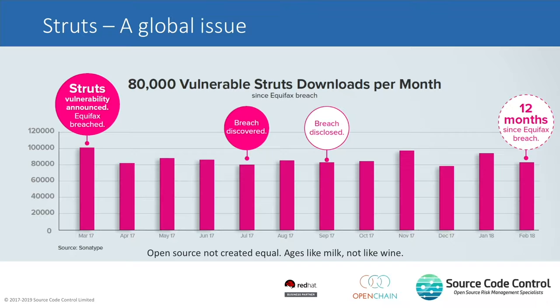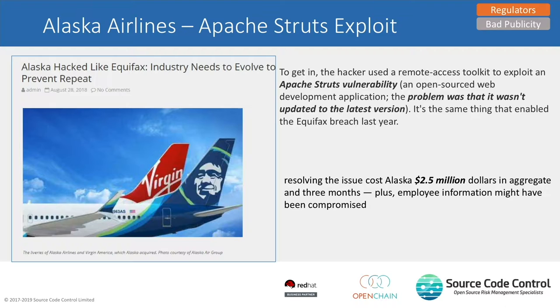This happens with other components as well. When the vulnerability was discovered and Equifax was breached in March 2017, stats from Sonatype on Apache Maven show that downloads for the insecure version of Apache Struts continued. Developers were using Apache Struts for a technical challenge and not tracking the version they were downloading. Even after the breach was disclosed, 12 months later, individual developers were still downloading the insecure version of Apache Struts. Alaska Airlines was also breached through that same exploit a couple of months later. Apache Struts is one of those components I talked about at the beginning.